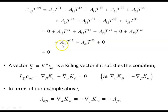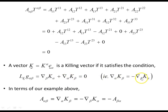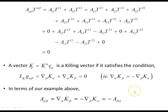A vector k = k^α e_α is a Killing vector if it satisfies the condition that the Lie derivative of the metric with respect to k is zero — this is the Killing equation. The covariant derivative ∇_α k_β is anti-symmetric: reversing the indices gives −∇_β k_α, confirming this is an anti-symmetric rank-2 tensor. So the covariant derivative of the Killing vector with lowered index gives a rank-2 anti-symmetric tensor.